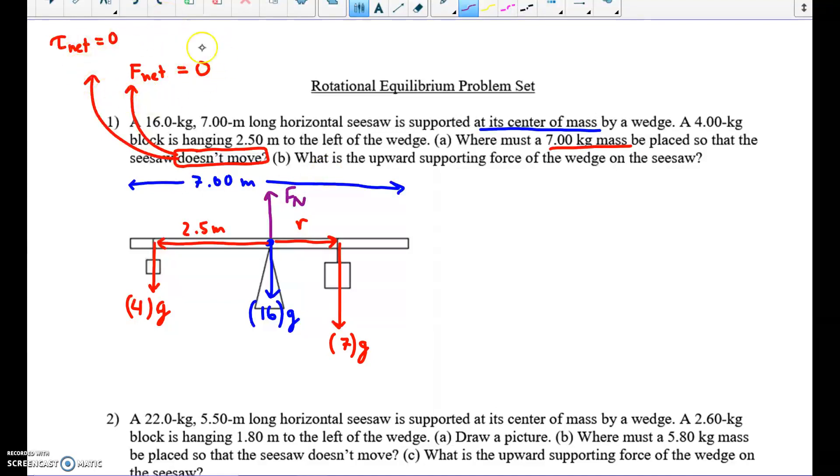Because we have total equilibrium, or static is the fancy term, which we're not really going to be using, but static equilibrium, we can balance the torques. We can say the clockwise torques balance the counterclockwise torques. But we can also balance the forces. So there's only ups and downs, but the up forces have to balance the down forces.